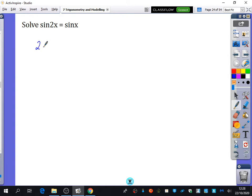Sin(2x) can be replaced with 2sin(x)cos(x). That's from the double angle formula, and that is equal to sin(x).